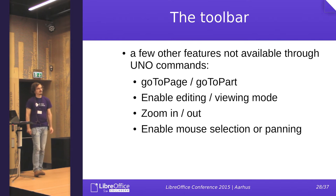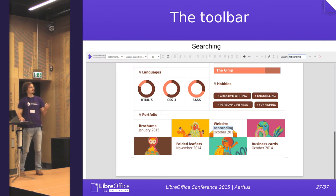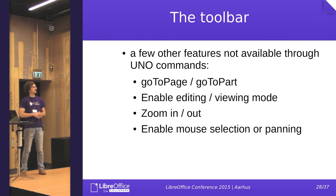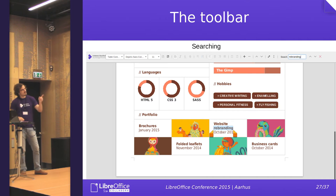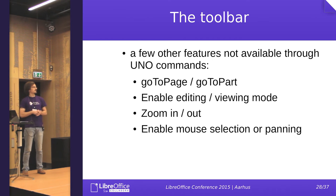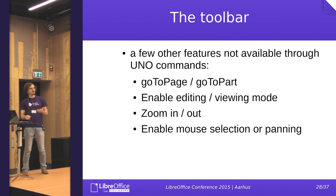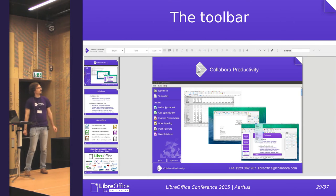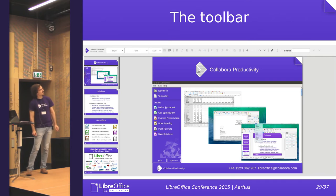Most of the toolbar buttons work through commands like bold and so on, but we also have some of our own methods like go to page, go to part, and enable editing. There's a button next to the search for enabling editing. When disabled, the user can pan the document and interact with it like you would with a map. While in viewing mode, the user can also enable selection for a short time to select text with the mouse.